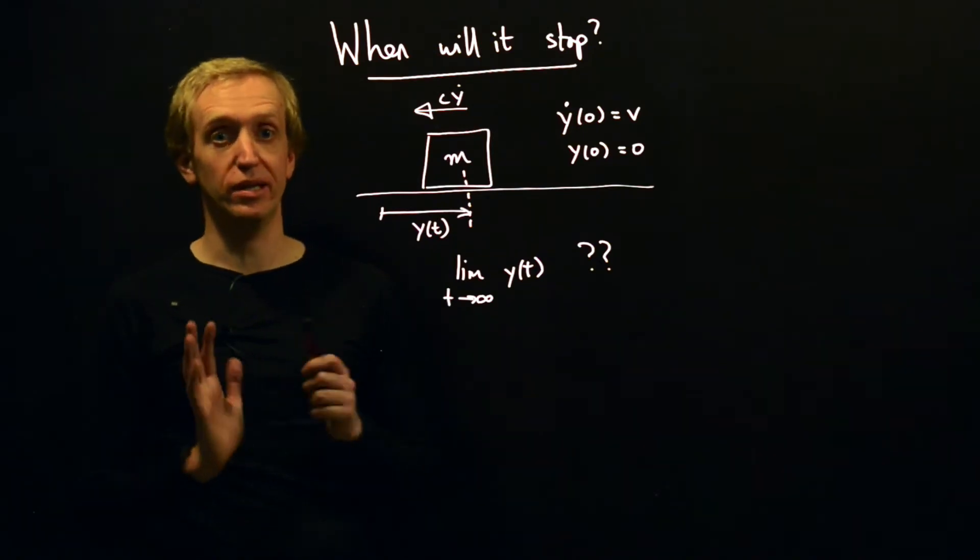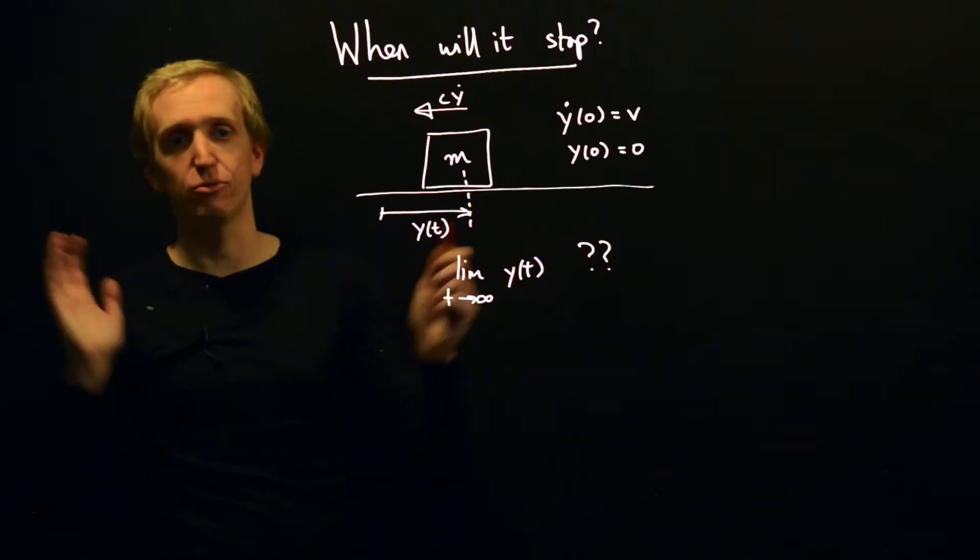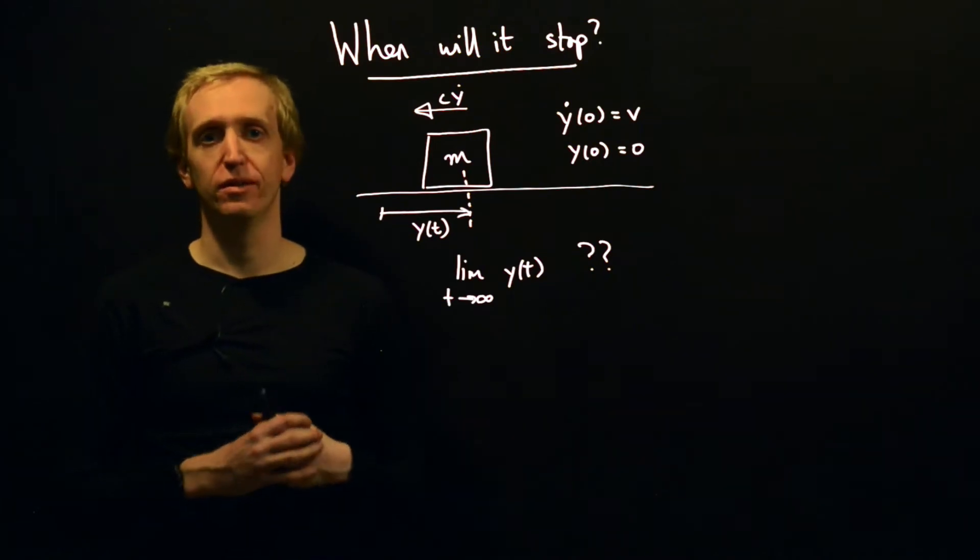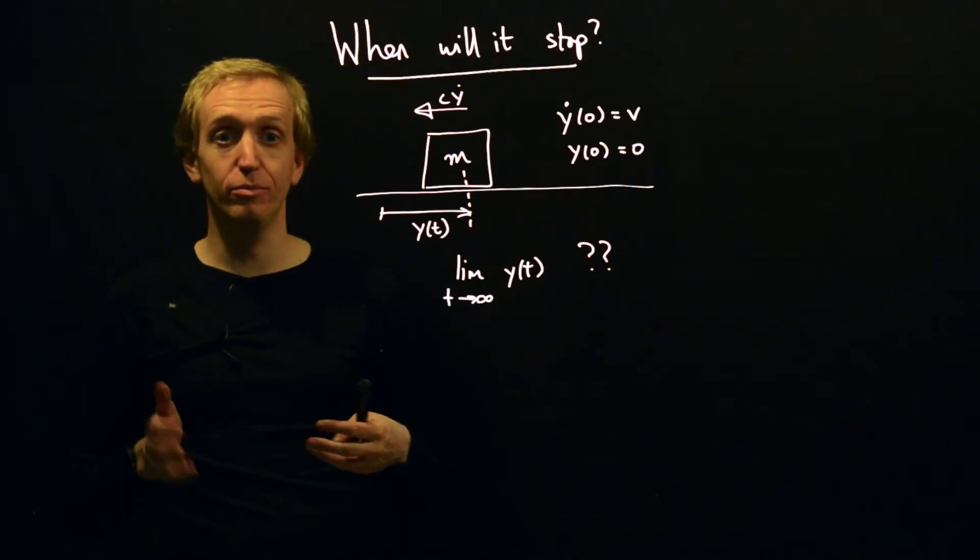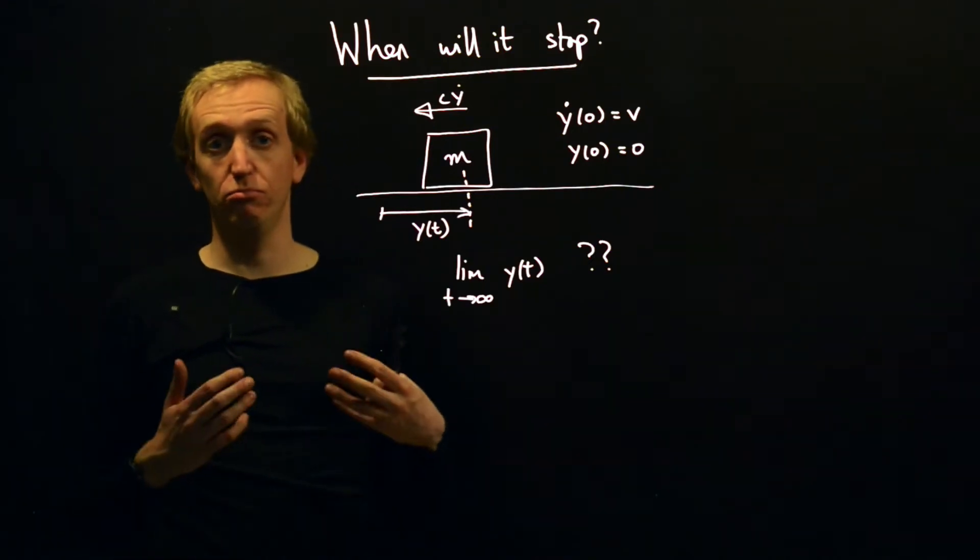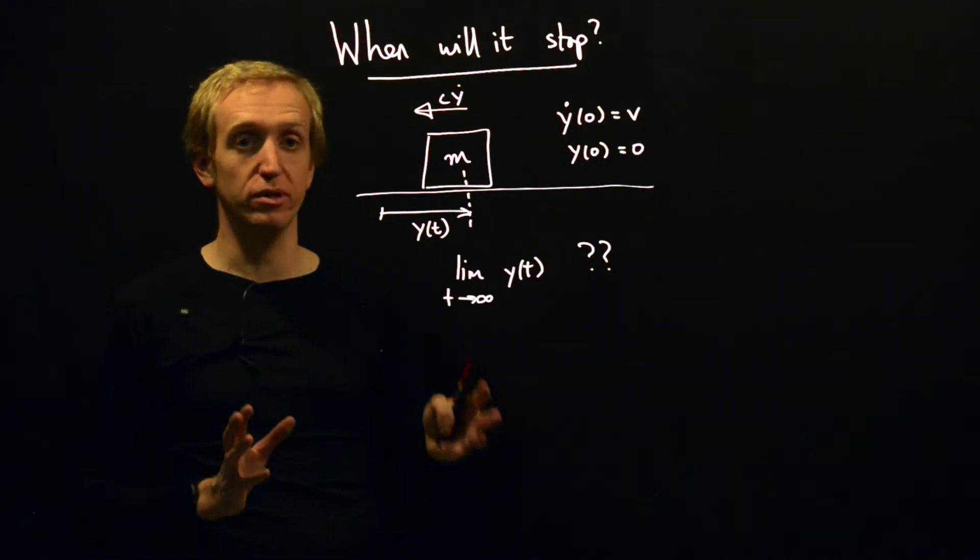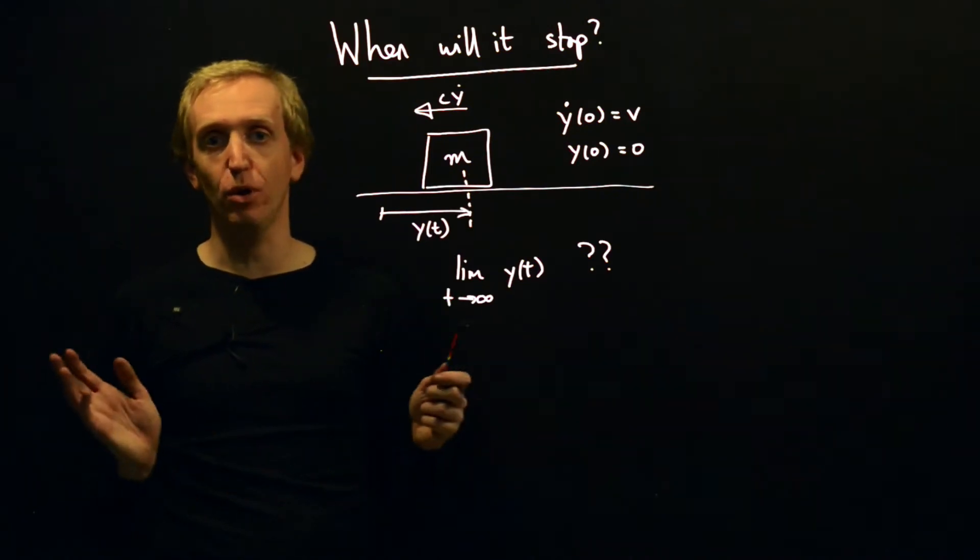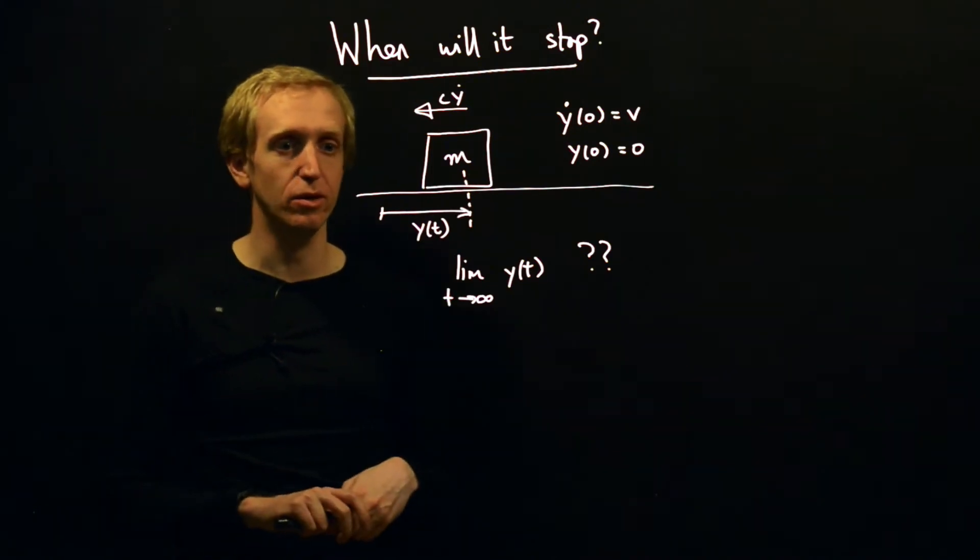And the tool we're going to use to do this is the final value theorem. So this is really a mini lecture about what the final value theorem is, where does it come from, and how do we use it. And to sort of keep everything focused, we're going to study a problem involving a sliding block and try and work out when it's going to stop.